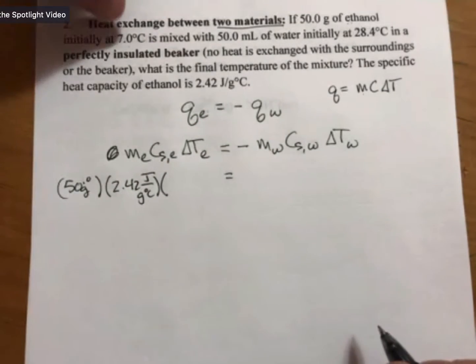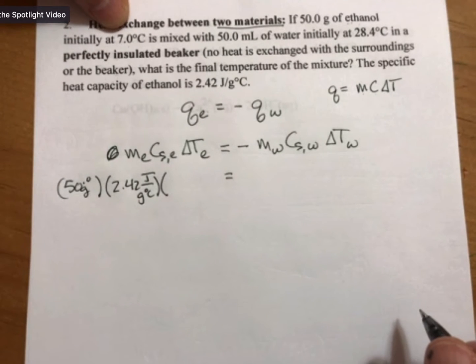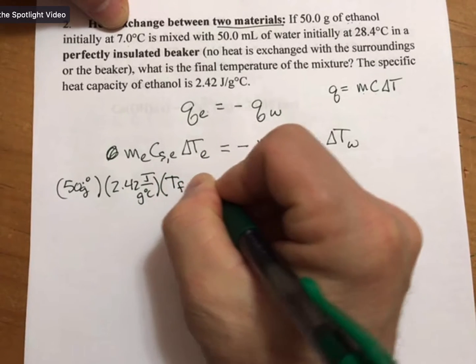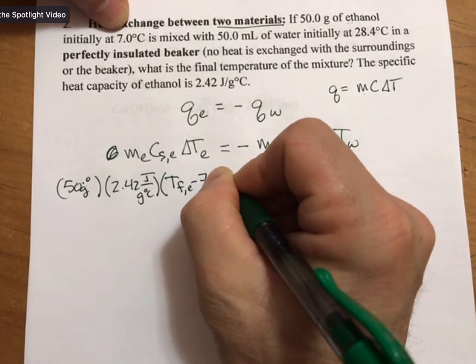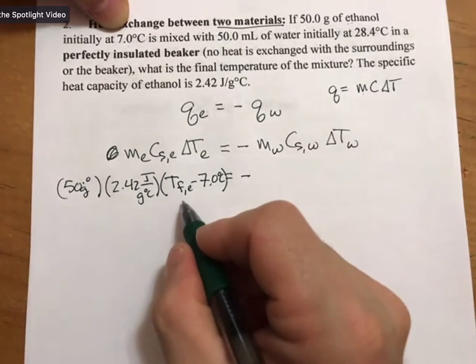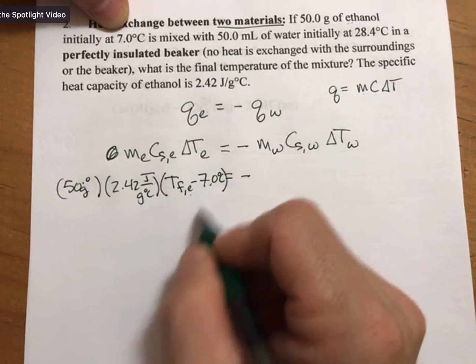And while we do have the initial temperature of ethanol, we are solving for the final temp. So T final of ethanol minus 7 degrees.